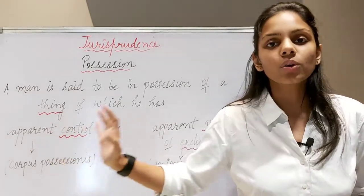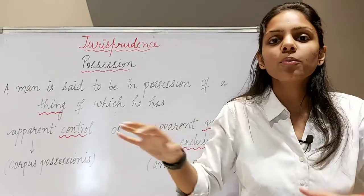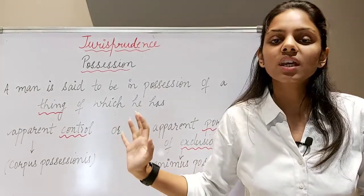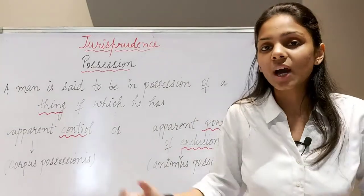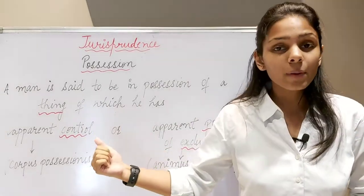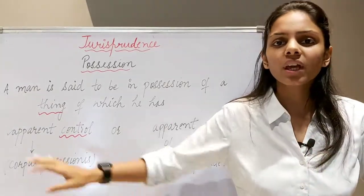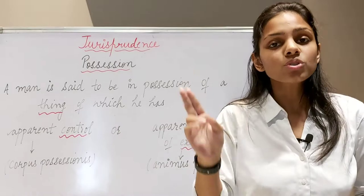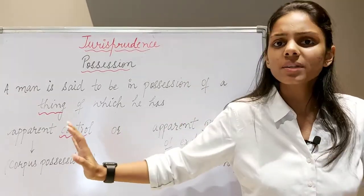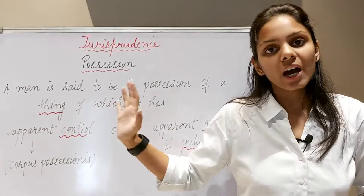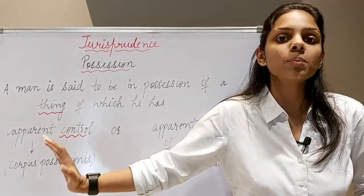So these are the two different parts jo ki humne possession ki definition mein dekhe: possession ki do different parts hoti hain — corpus and animus. Corpus ko hum log corpus possessionis bolte hain, aur animus ko hum log animus possidendi bolte hain. These are two different elements of possession — ek hota hai apparent control, aur ek hota hai apparent power of exclusion of others from use and enjoyment of a particular thing. Dono cheezain hi rehti hain, tabhi possession aati hai. Ab ek important point ye hai ki yahan pe hum ne word likha hai 'or' — 'and' nahi hai. Iske definition mein aapko word 'or' dikhega. 'Or' ka matlab hota hai either this or that — dono cheezain ek time pe necessarily hon, yeh zaroori nahi hai. Ya mere paas kisi cheez ka corpus ho, ya animus ho — in mein se koi ek bhi hoga, toh bhi hum kahenge ki mere paas us cheez ki possession hai.